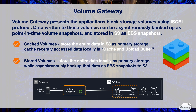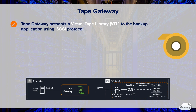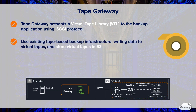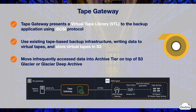Tape Gateway stores your virtual tapes in service-managed S3 buckets and creates new virtual tapes automatically, simplifying management and transition to the cloud. Tape Gateway presents a virtual tape library (VTL) consisting of virtual tape drives and a virtual media changer to your backup application using iSCSI protocol. You can continue to use your existing tape-based backup applications and workflows while writing data to a nearly limitless collection of virtual tapes, with each virtual tape stored in Amazon S3. When you no longer need frequent access to data in a virtual tape, you can have the backup application move it from the Storage Gateway VTL into an archive tier on top of S3 Glacier or Glacier Deep Archive.